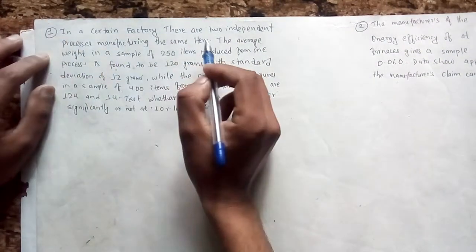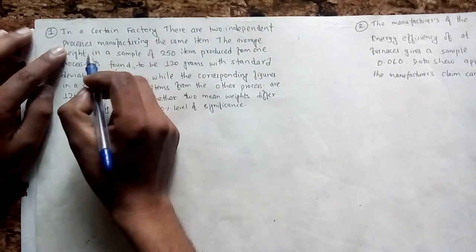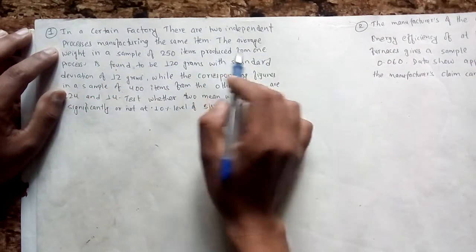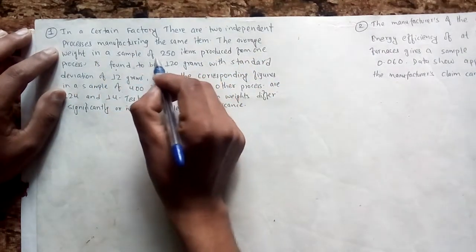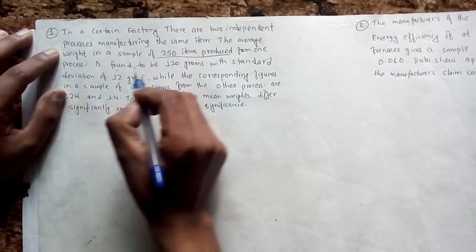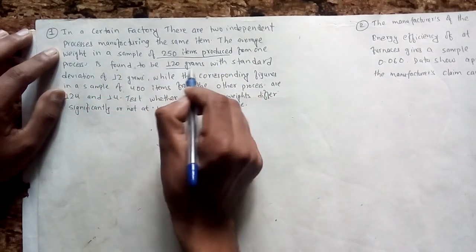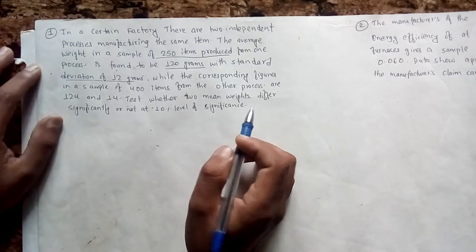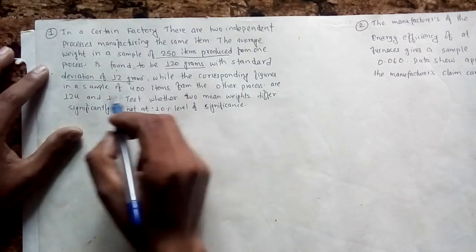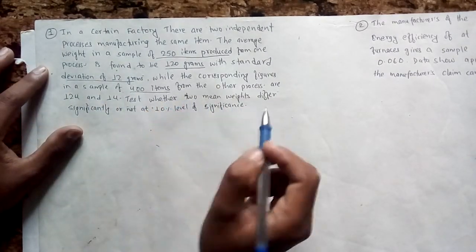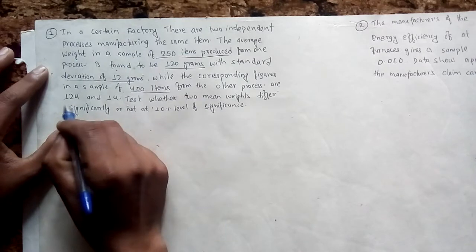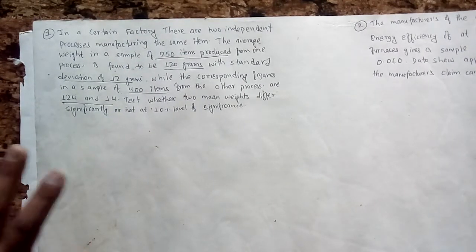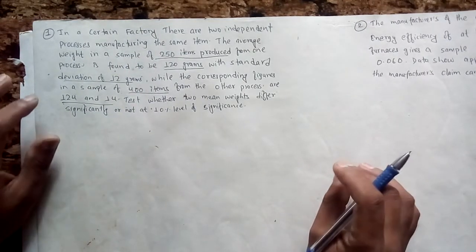In a certain factory, there are two independent processes manufacturing the same item. The average weight in a sample of 250 items produced from one process is found to be 120 grams, with a standard deviation of 12 grams, while the corresponding figures in a sample of 400 items from the other process are 124 and 14. Whether the two mean weights differ significantly or not at a 10% level of significance.